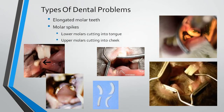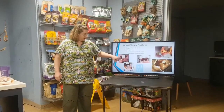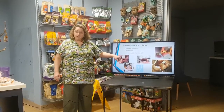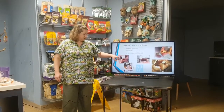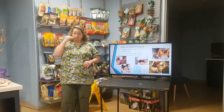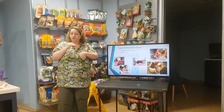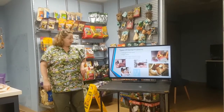Now we're getting into molar problems — the back teeth, the cheek teeth. Here's a view of the right side, looking into the mouth. These are his right lower teeth that are spiking towards the tongue. Sometimes that can even cause lacerations in the tongue. Think about every time you move your tongue, it's scraping against this needle — it is a very painful thing.